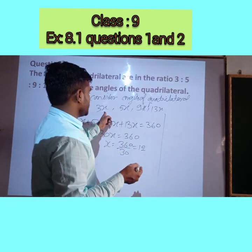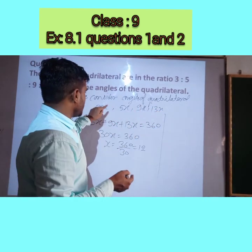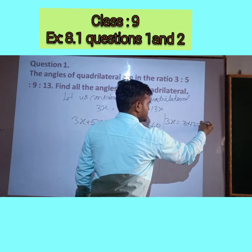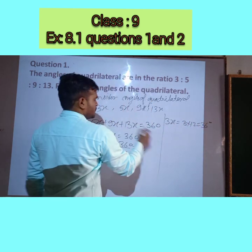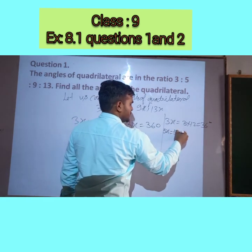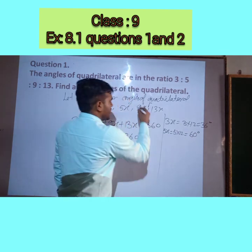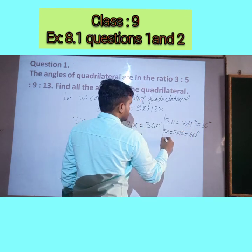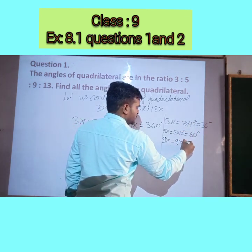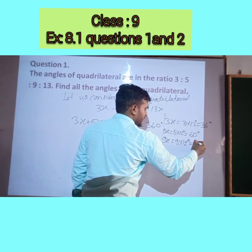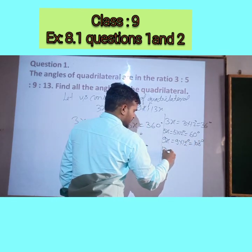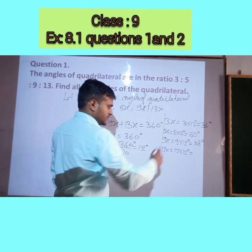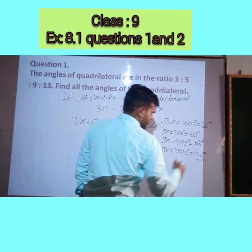Now we replace x with 12 in each angle. So 3x = 3×12 = 36°, 5x = 5×12 = 60°, 9x = 9×12 = 108°, and 13x = 13×12 = 156°. These are all four angles of the quadrilateral.